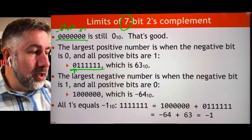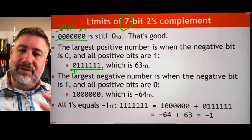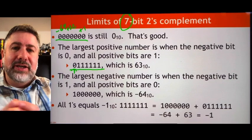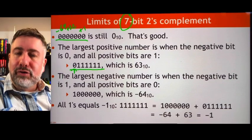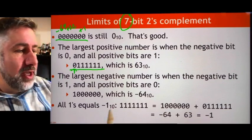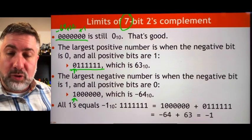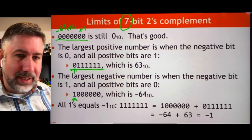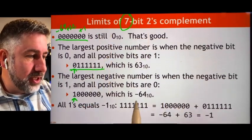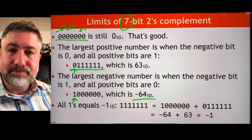The largest negative number is the opposite: we have all value in the negative place value and no value in the positive place values. If we add that up, all we have is the one negative place value, and so in a 7-bit representation, this gives us negative 64.